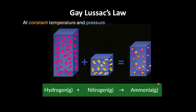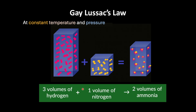Now let's apply this same law to another reaction — the production of ammonia gas from hydrogen gas and nitrogen gas. Let's figure out whether the whole number ratio of volumes holds true here also. It was observed experimentally that 3 volumes of hydrogen combined with 1 volume of nitrogen to produce 2 volumes of ammonia at constant temperature and pressure. So if I take 300 ml of hydrogen gas with 100 ml of nitrogen gas, what will be produced is 200 ml of ammonia.